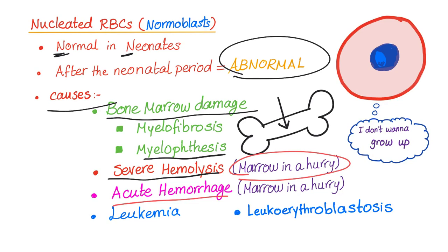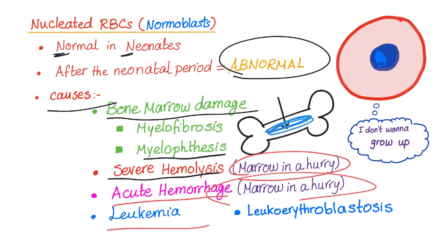Acute hemorrhage is the same situation — we are losing blood, we need more blood, and the bone marrow doesn't care if it's immature. Leukemia is another cause: if your bone marrow is sick and has cancer cells in it, your red blood cells are not going to be happy and mature and well — you'll end up with abnormal red blood cells.